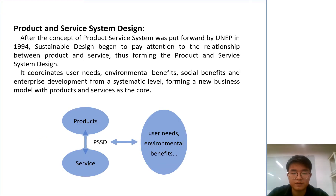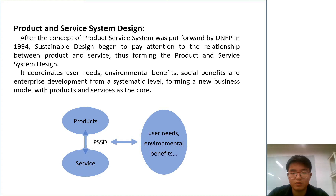There is also product and service system design. After the concept of product and service system was put forward by UNEP in 1994, sustainable design began to pay attention to the relationship between product and service, thus forming the product and service system design. It coordinates user needs, environmental benefits, social benefits, and enterprise development from a systematic level, forming a new business model with products and services as the core.